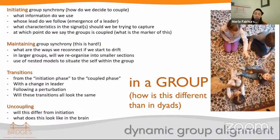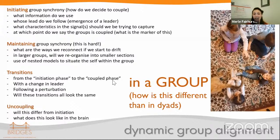Something that I think is super important and which there's very little research done is this idea of uncoupling. My kids have to decide to stop singing, to stop being coupled and go their separate ways. What does the data look like there? Does it look like the opposite of initiation? And what do all these phenomena look like in the brain?